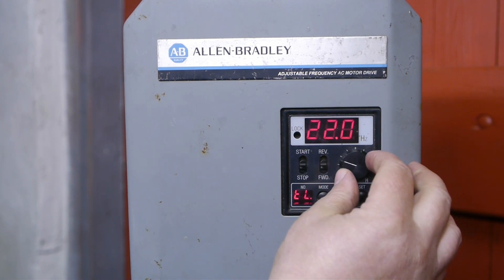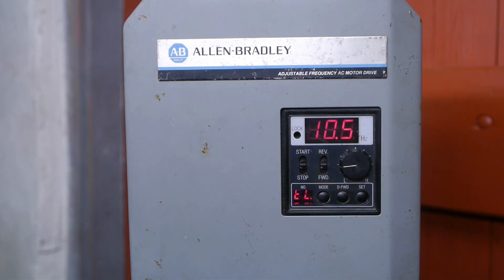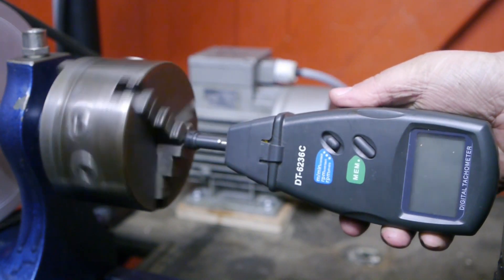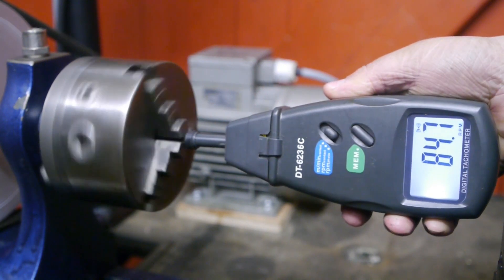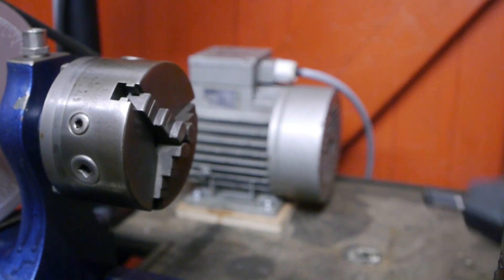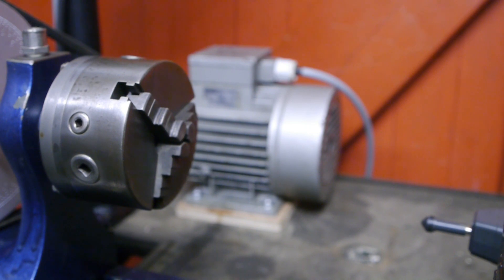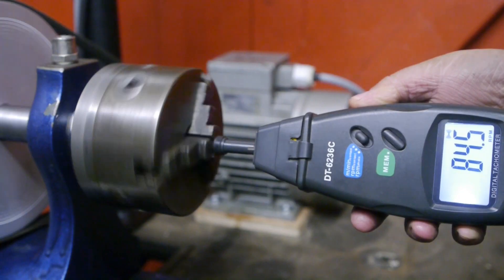I'll set it to 10 Hertz. This way we know immediately how many RPMs a 10 Hertz increment is. 85 RPM, and that's a bit faster than the 80 RPM I expected, but it's pretty close.